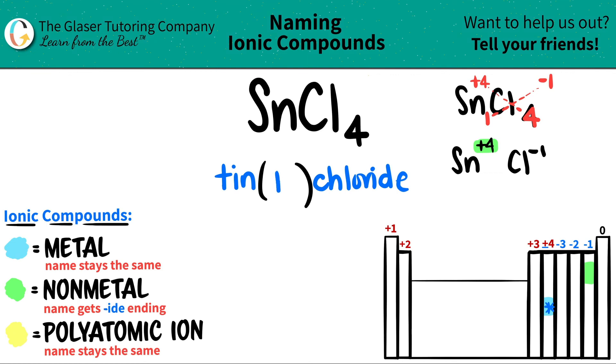and that's a IV, right? So that's all you got to do. You don't have to put a plus IV, right? Just the Roman numeral. And that's it. So tin IV chloride is the ionic name for SnCl4.